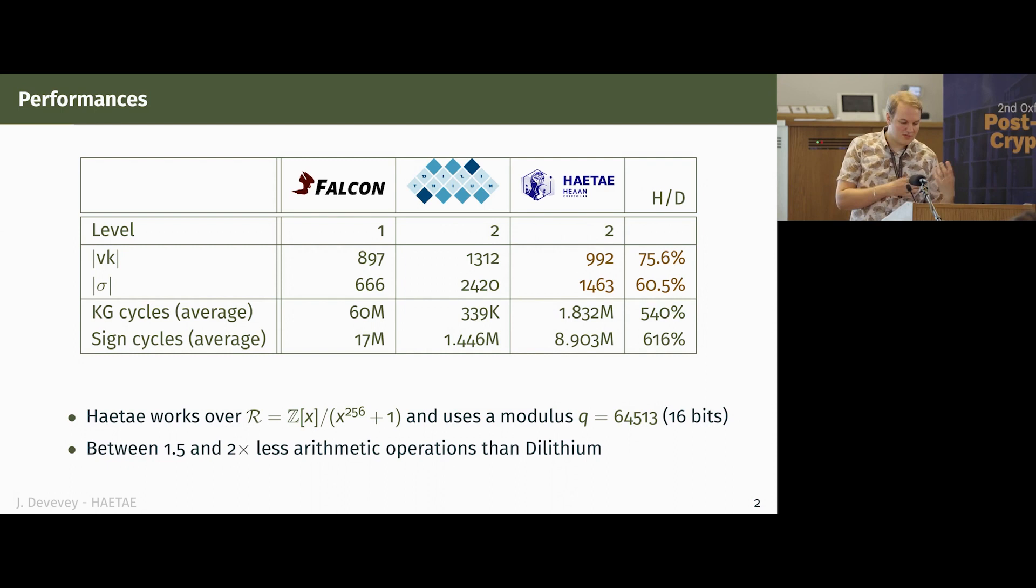However, we didn't do that on purpose. We tried to have all the efficiency requirements that you have in structural lattices. Since we have smaller sizes, it means that we could also get lower dimensions and keep the same amount of security. So it means that we are actually using less arithmetic operations than Dilithium, which is a bit contradictory with the fact that we are slower. And here I only reported on level two security, but we also have level three and five, just like for Dilithium.